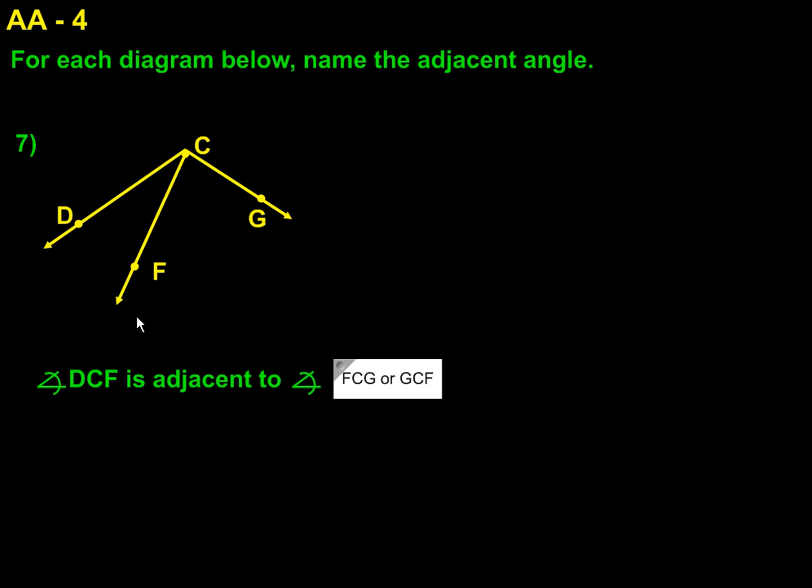Moving to number seven, we have angles DCF. DCF is adjacent to angle, well, it would be either FCG or GCF. C has to be the vertex because it is the center of the original angle that we started with.